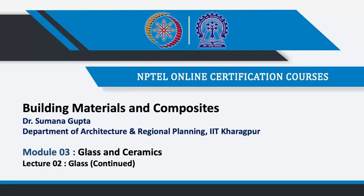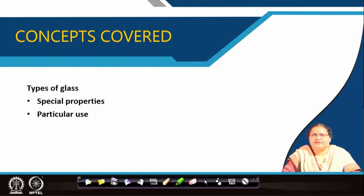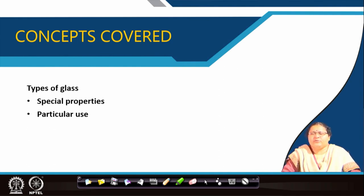We come to lecture 2 of module 3, where we will elaborate mostly on the types of glass which you as architects should know. We will mostly concentrate on the types of glass, their special properties and their particular use, so that you can recommend proper glass wherever you are going for some special use. More or less we will see the use of plate glass, sheet glass, or float glass, which we had discussed in lecture 1. But we require particular types of glass mostly when we are going for special uses.